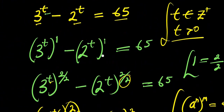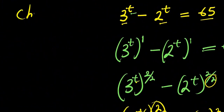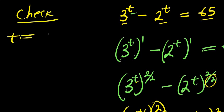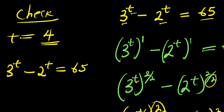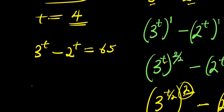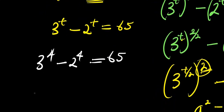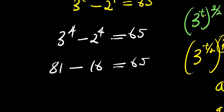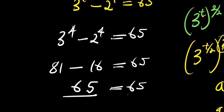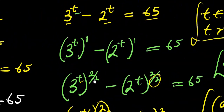Now let's check: with t equals 4, substituting into 3 power t minus 2 power t equals 65, we get 3 power 4 minus 2 power 4 equals 65. 3 power 4 is 81, and 2 power 4 is 16. Indeed, 81 minus 16 equals 65. The answer is verified and correct. Thank you and goodbye.